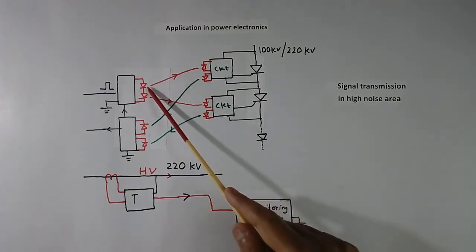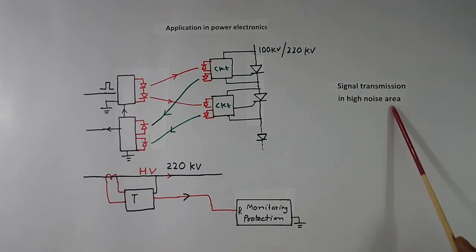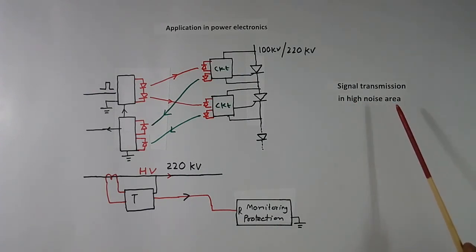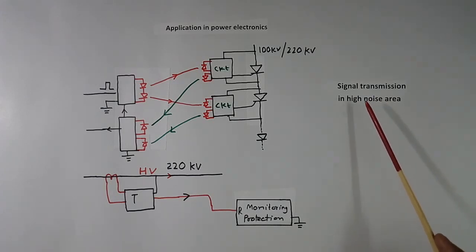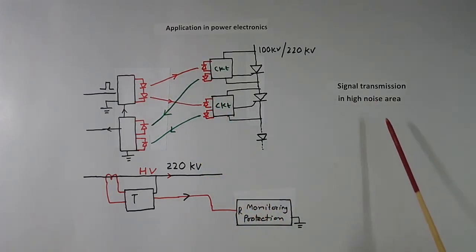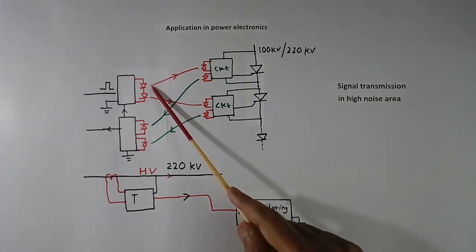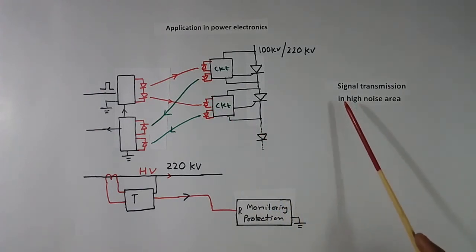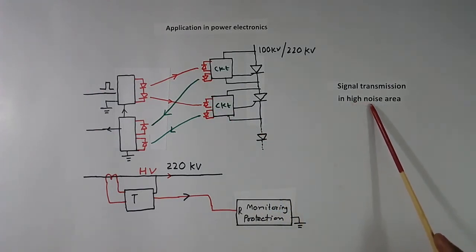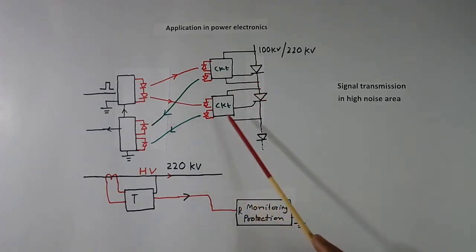We also use optical cable in very high electrical noise areas, even where the distance may be less or high voltage is not present, but because electrical noise is high we must use optical cable. For example, in locomotive coaches connected in a train, optical cables are used for normal signal transmission, triggering, and any other application.